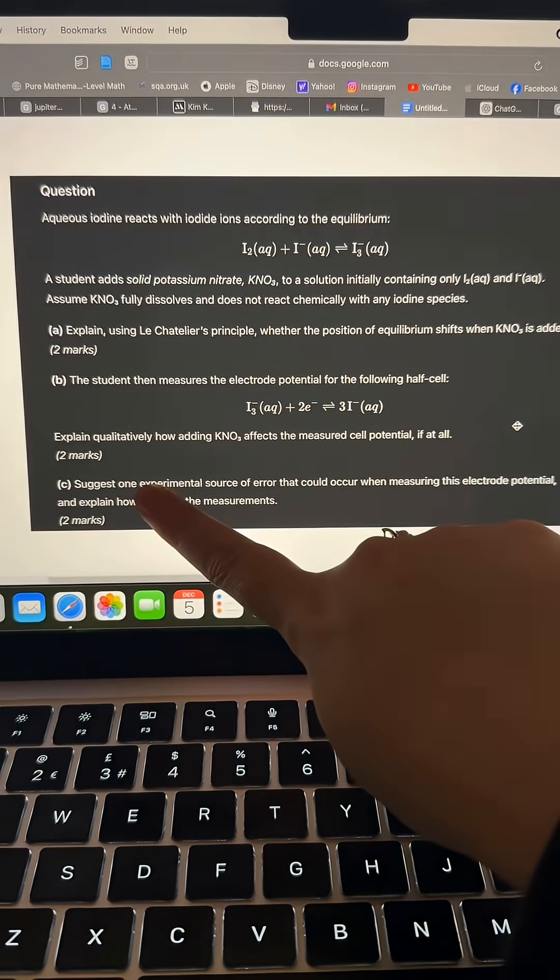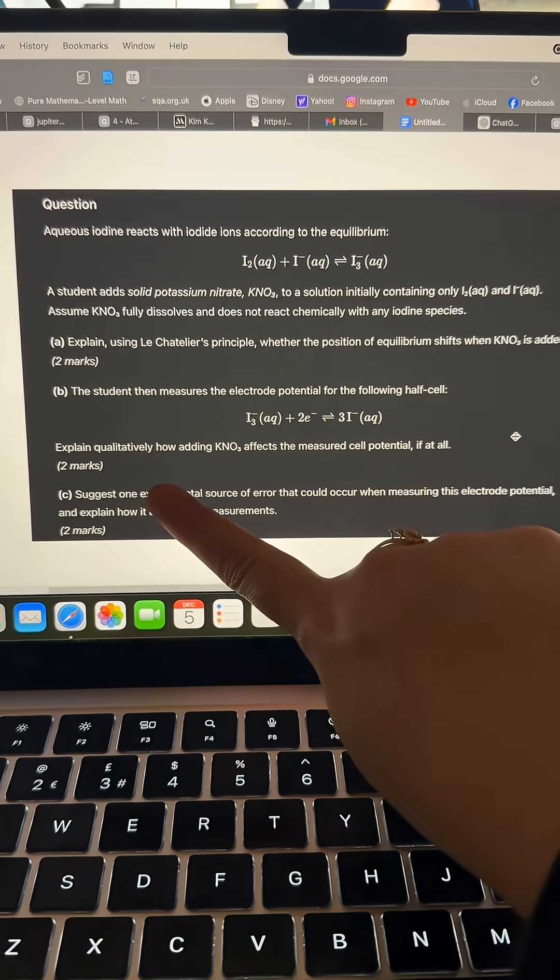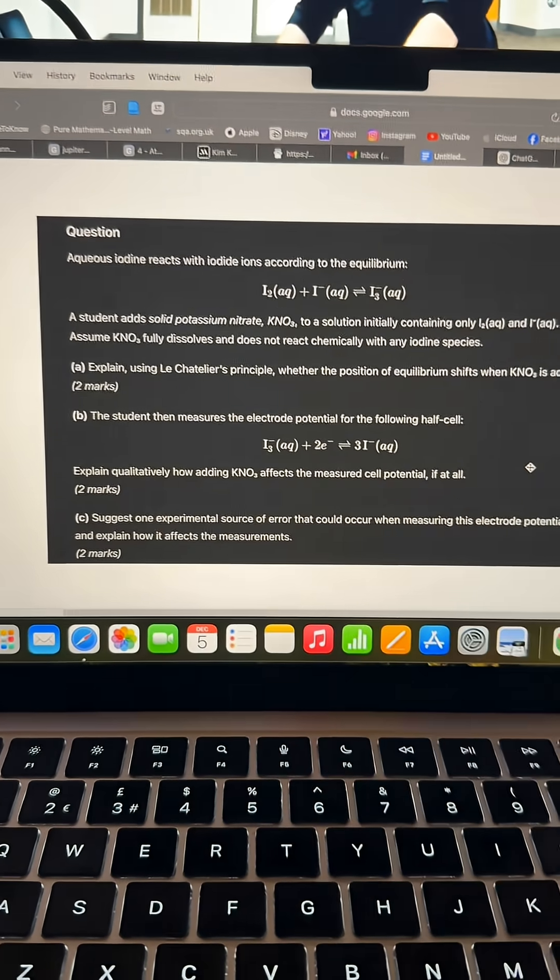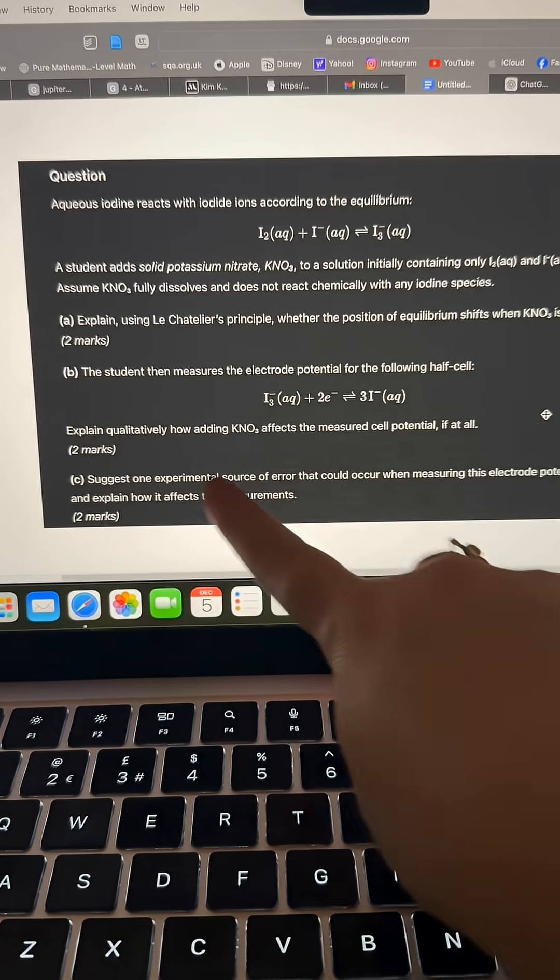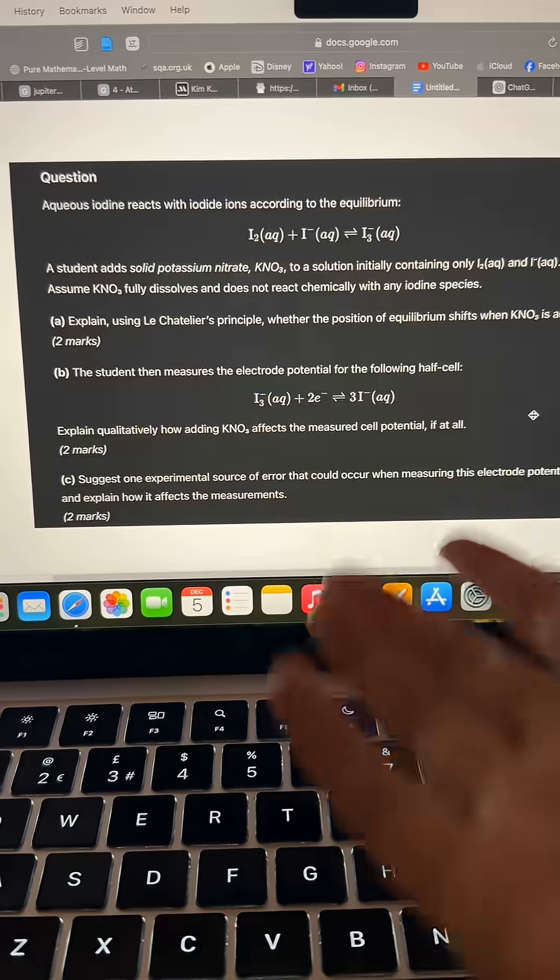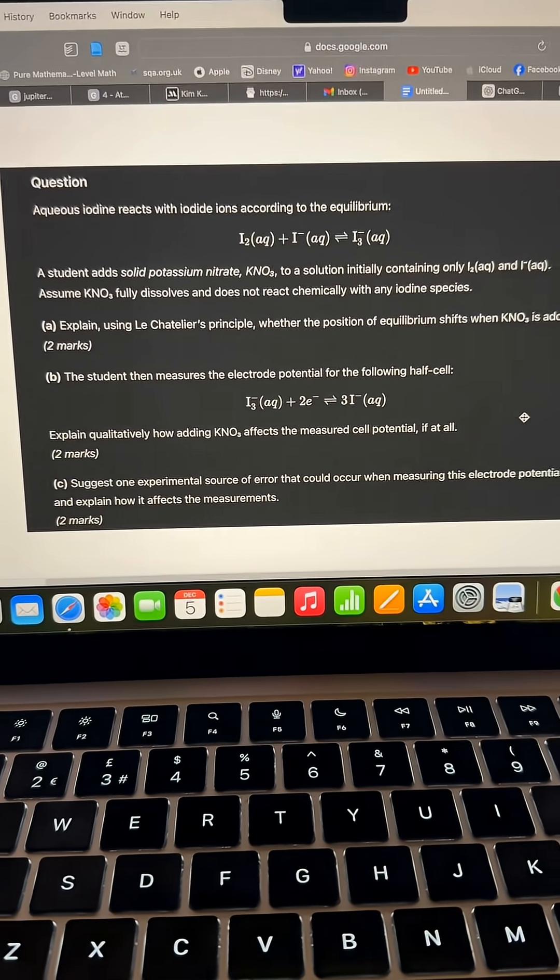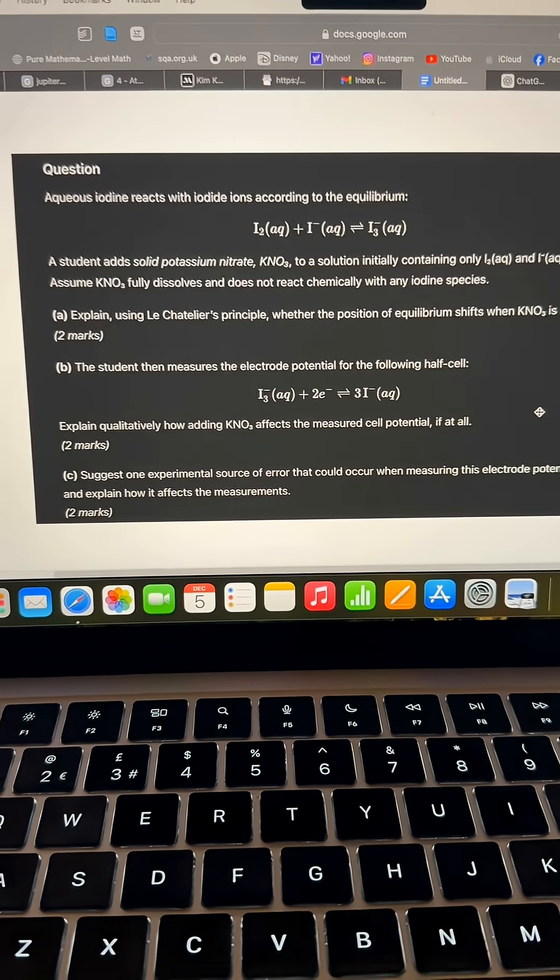And then last but not least, experimental source of error. If we remove the word experimental, one source of error would still make sense, so that means we're looking at something wrong with the experiment which is usually contamination, loss of material, parallax error potentially if there's any readings.